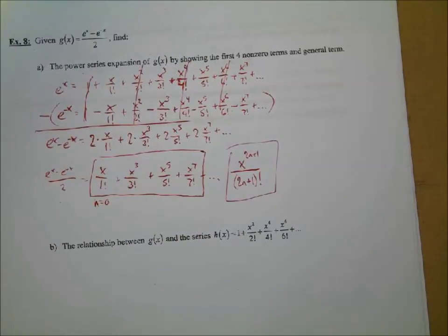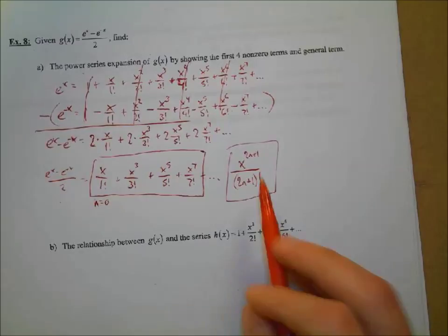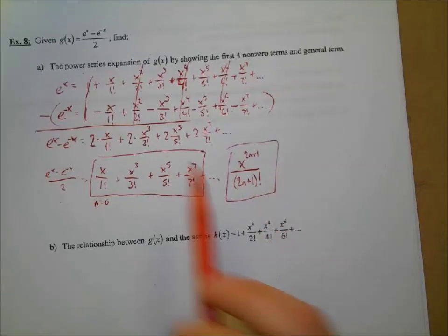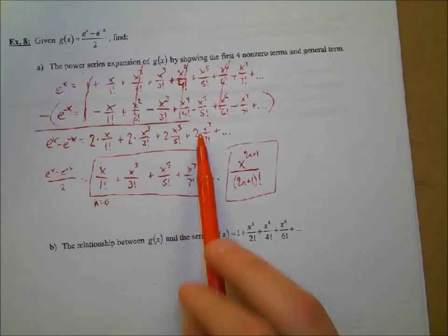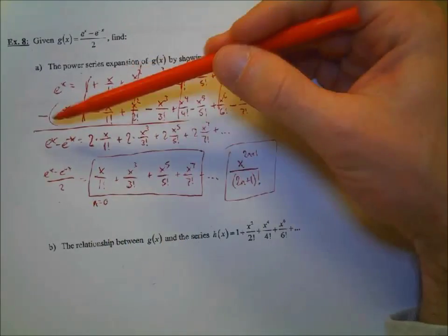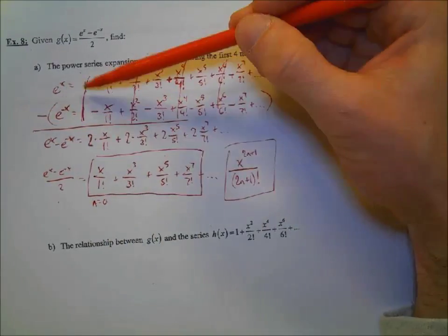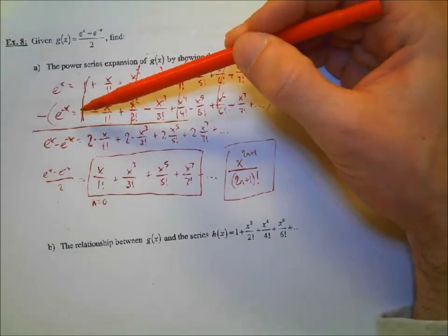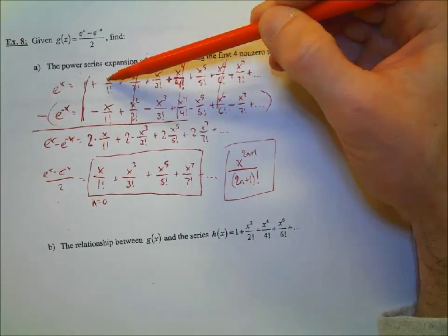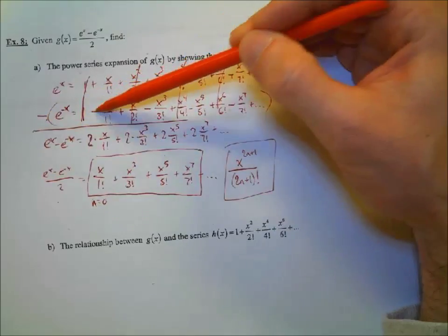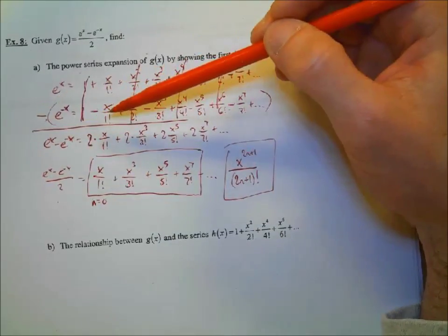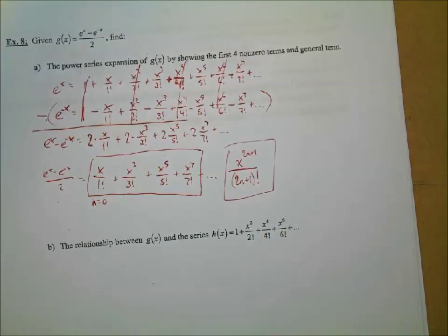Question — how do we get the multiplying by two? When we did the subtraction, one minus one canceled. But when you had x over one factorial minus a negative, minus negative becomes plus positive, so there are two of them now because of the exact same thing.